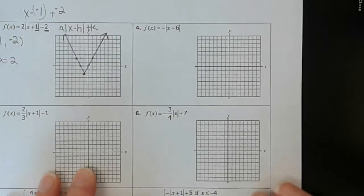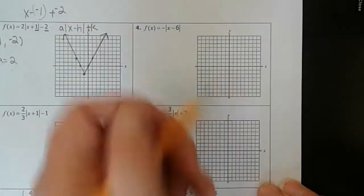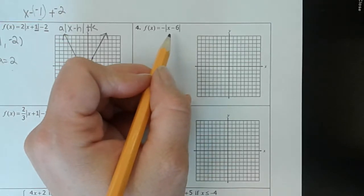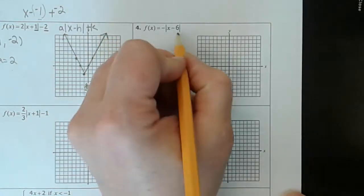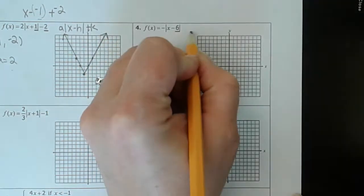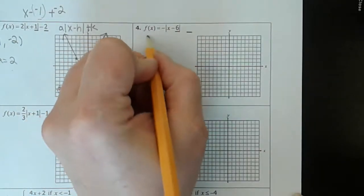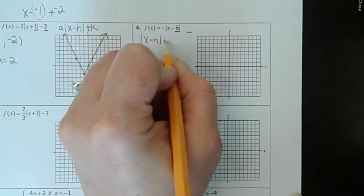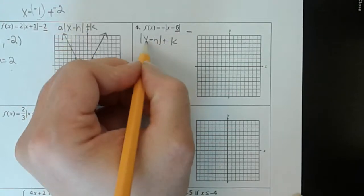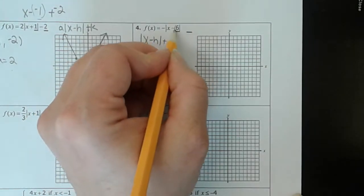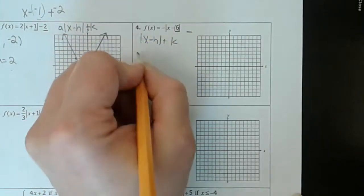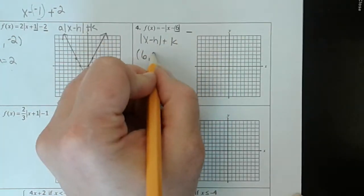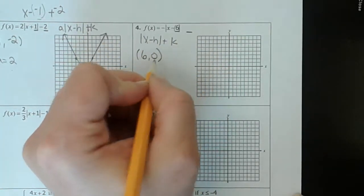Alright, vertex form of this one. This one has a vertex of h, k. So again, |x minus h| plus k. So x minus 6 — our h is 6. And our k, there's nothing there, which means it's 0. So that's our vertex.